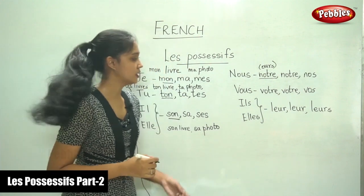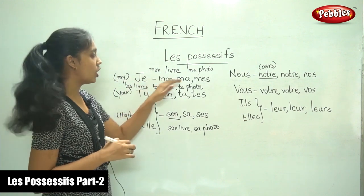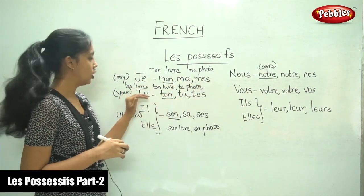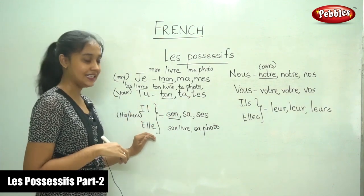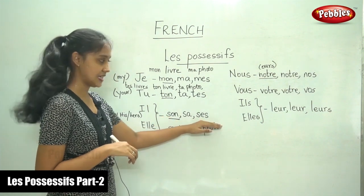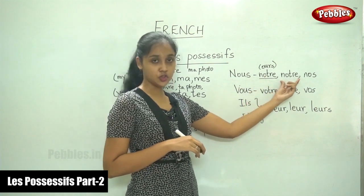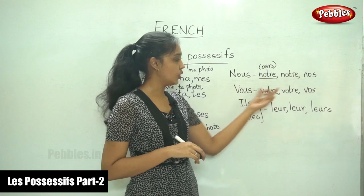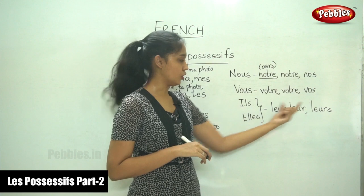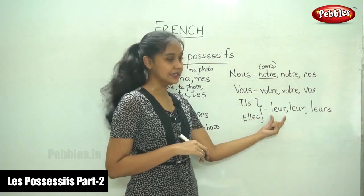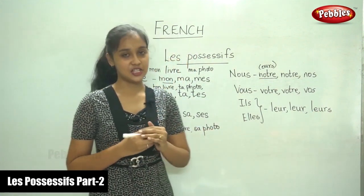So, these are the possessive adjectives. For je, it is mon, ma, or mes. For tu, ton, ta, or tes. For il or elle, it is son, sa, ses. For nous, it is notre — notre again for feminine also — and nos. For vous, votre, votre, and vos. For ils and elles, it is leur, leur, and leurs. So, these are the possessive adjectives.